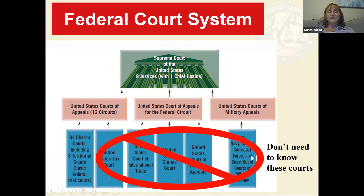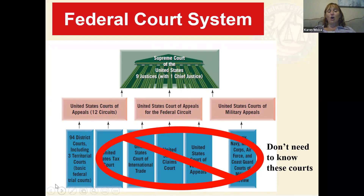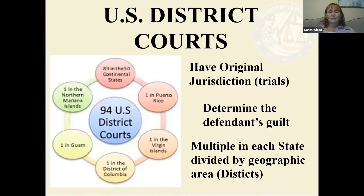In the federal system, the three main courts to know are the district court, the court of appeals, and the Supreme Court. The district court is the lowest court — the trial court — with original jurisdiction. The court of appeals is where you appeal if you believe there was a mistake at the lower court. The Supreme Court is our highest court.